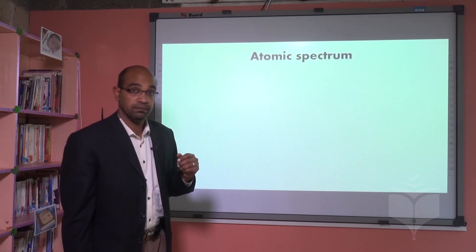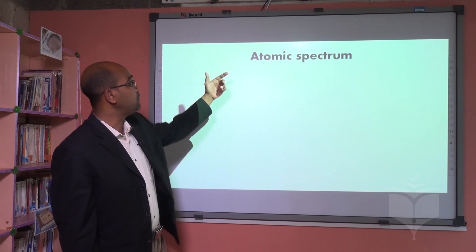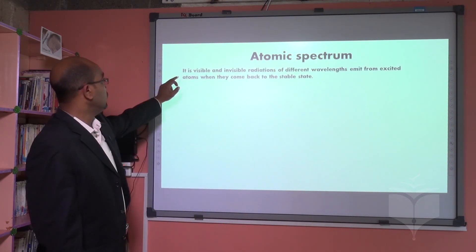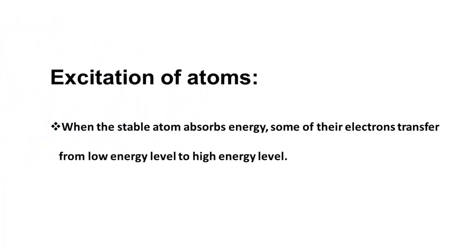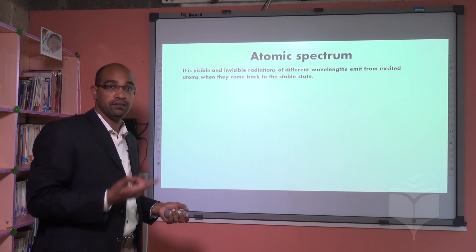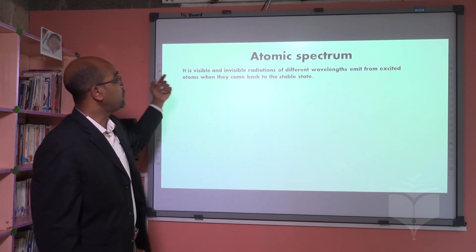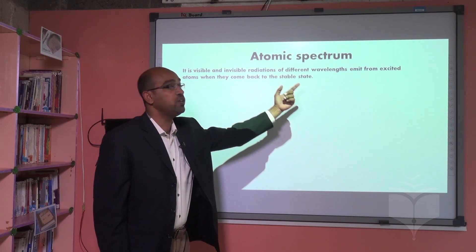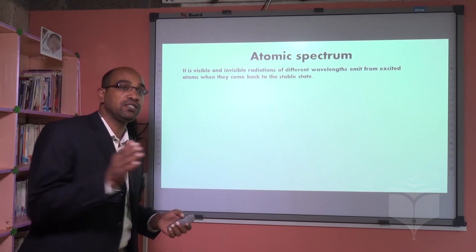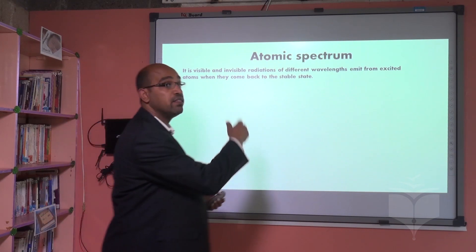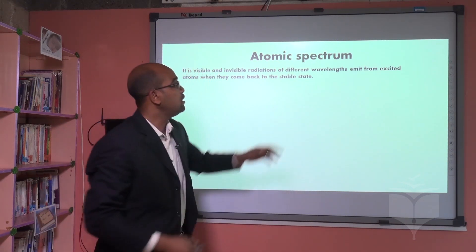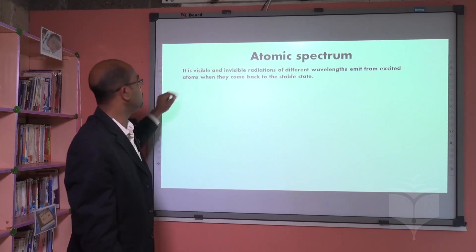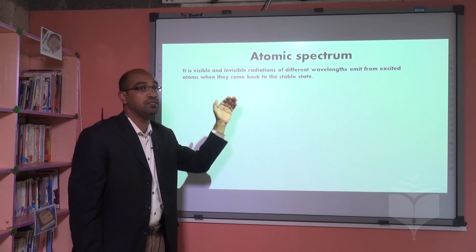The atomic spectrum is the last point from our previous lesson. The atomic spectrum consists of visible and invisible radiation — meaning some radiation we can see, and some we cannot see with the human eye. It is defined as visible and invisible radiation of different wavelengths and frequencies emitted from excited atoms when they return to the stable state.